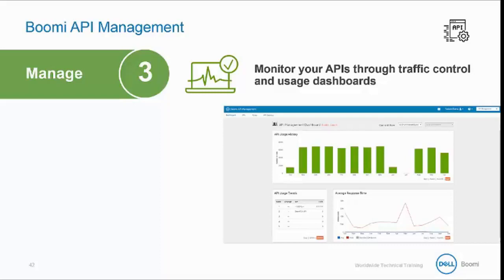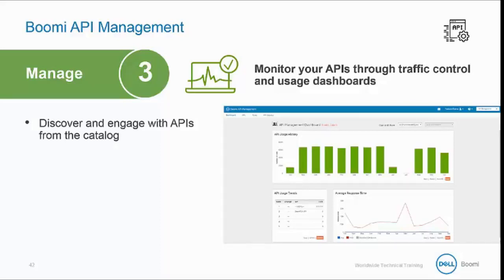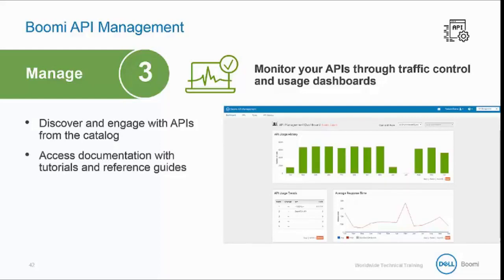The third phase is to manage APIs. You'll have a centralized location to manage all of your APIs, no matter how your APIs are created. You can expose APIs for API consumers and developers outside your organization and provide controlled access to discover and engage with APIs from the catalog. You can access all the API documentation with tutorials and reference guides, and expose the API documentation and explorer tools via Swagger.